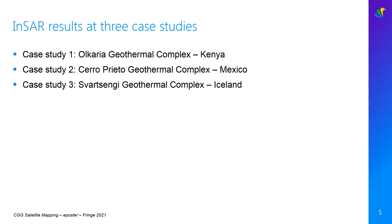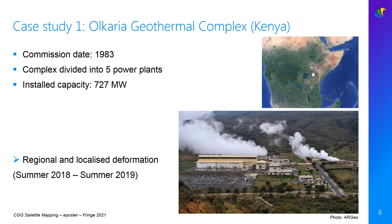To illustrate this, I will now briefly go through three examples: one in Kenya, one in Mexico, and one in Iceland. The first case study is at the Olkaria geothermal complex in Kenya, where we have identified localised and regional deformation across the period from summer 2018 to summer 2019.